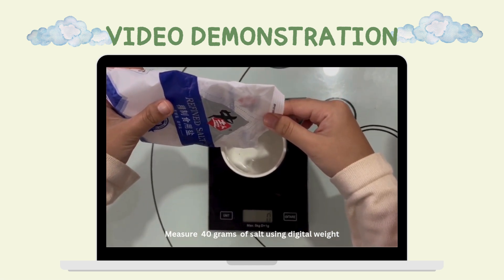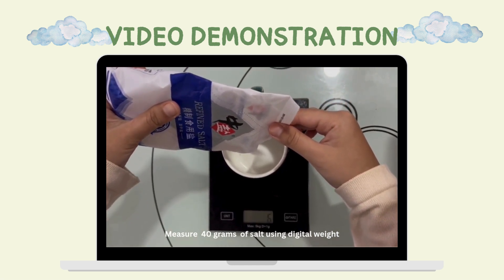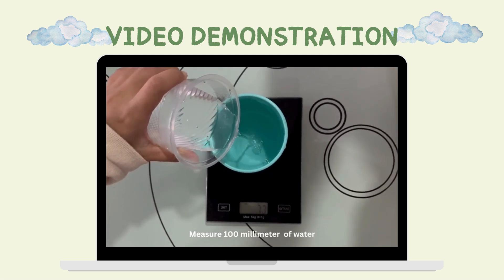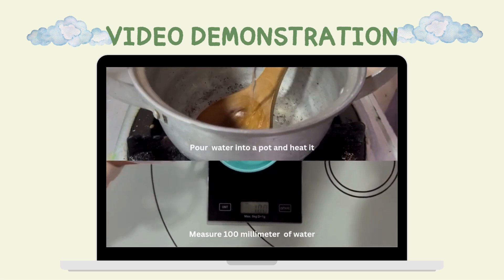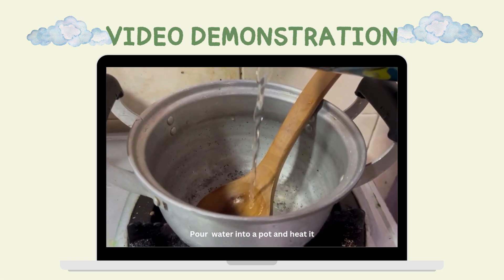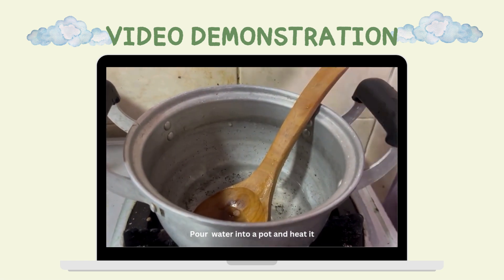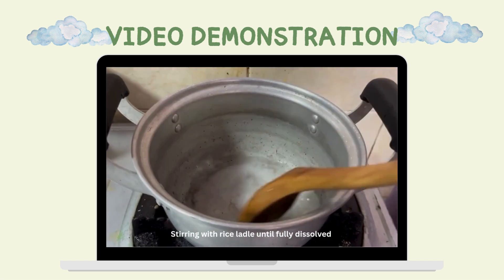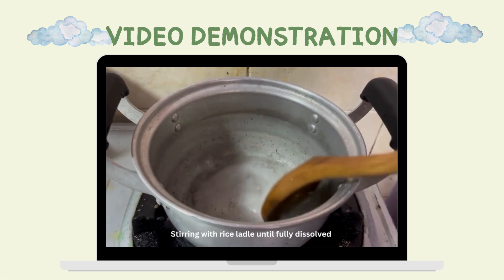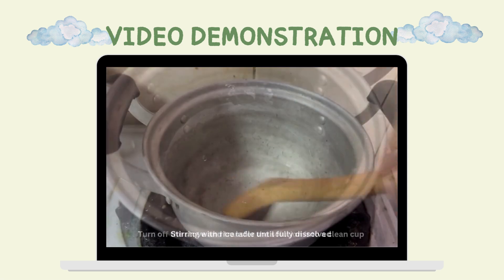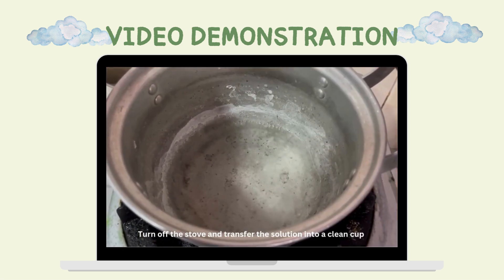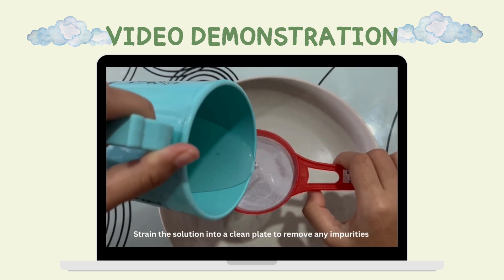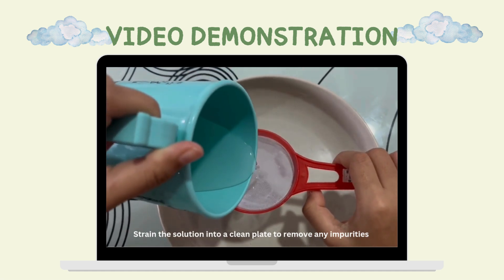Measure 40 grams of salt using a digital scale. Measure 100 millilitres of water. Pour the water into a pot and heat it. Add salt gradually, stirring with a rice ladle until fully dissolved. Turn off the stove and transfer the solution into a clean cup, then strain the solution into a clean plate to remove any impurities.